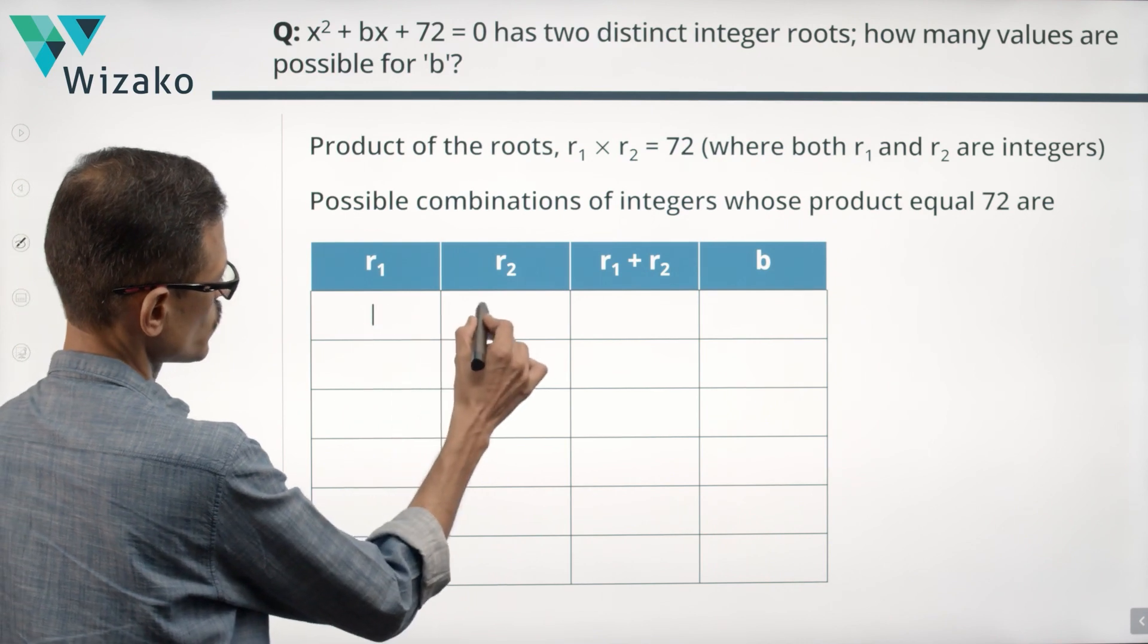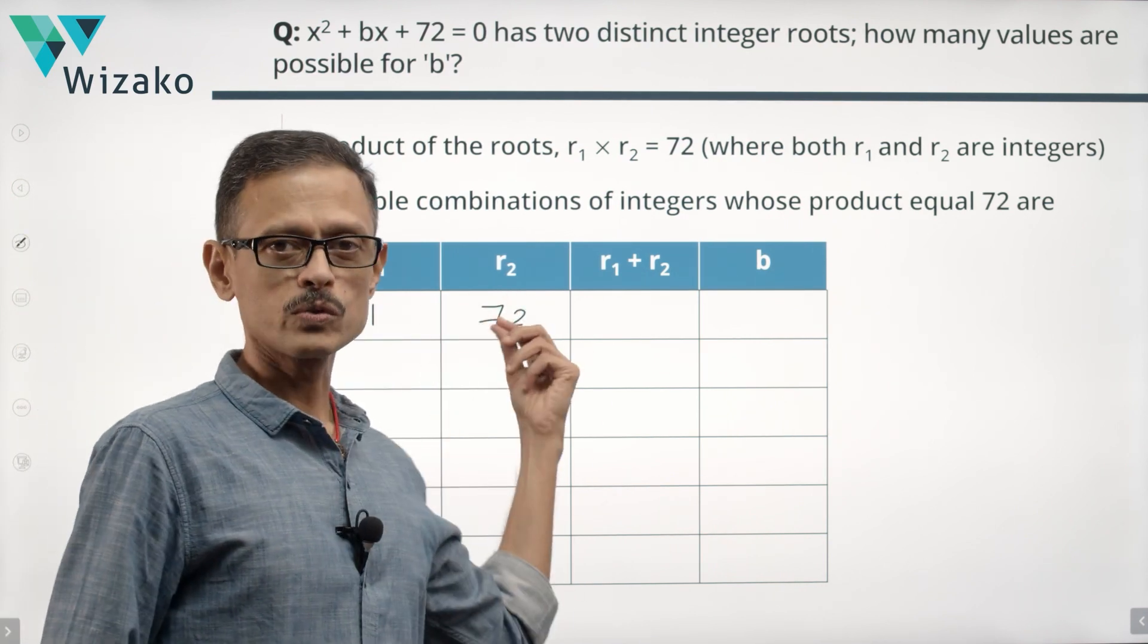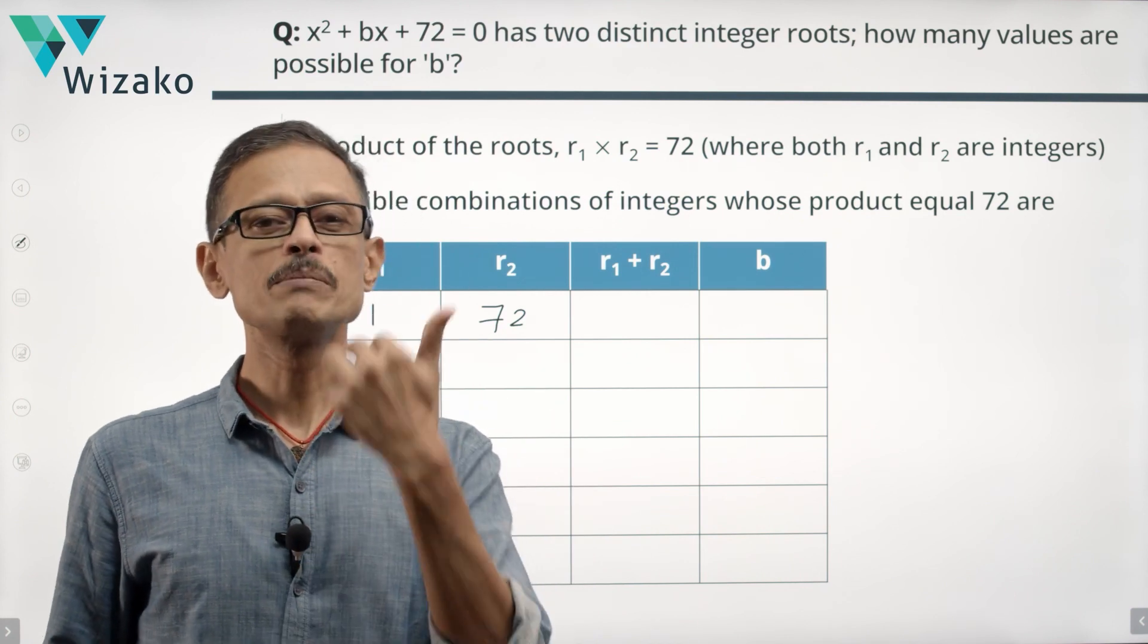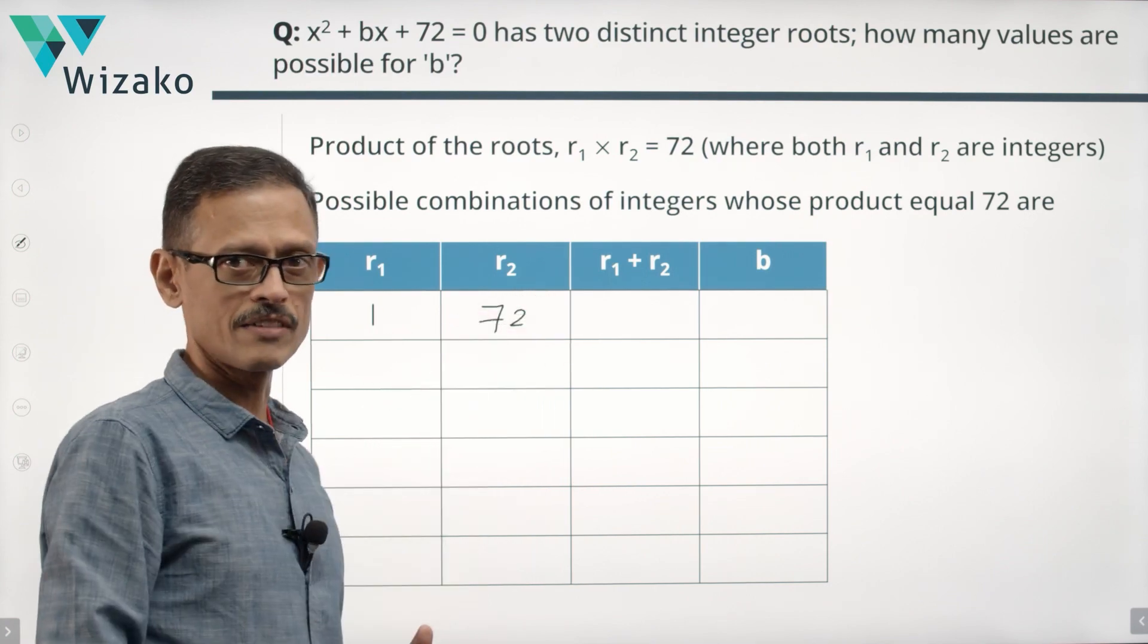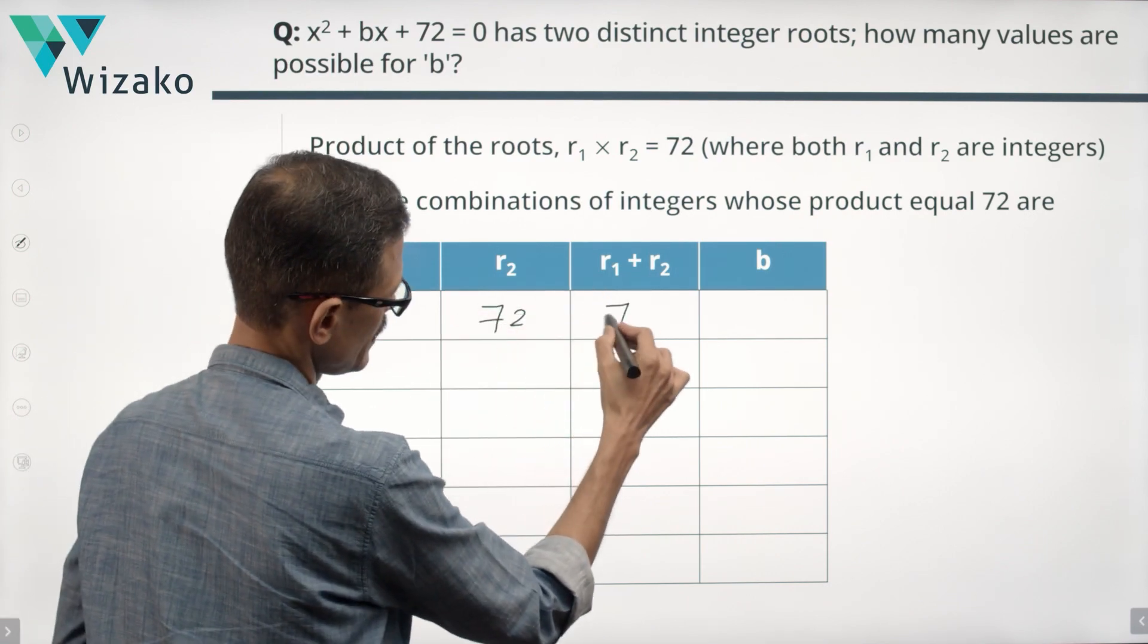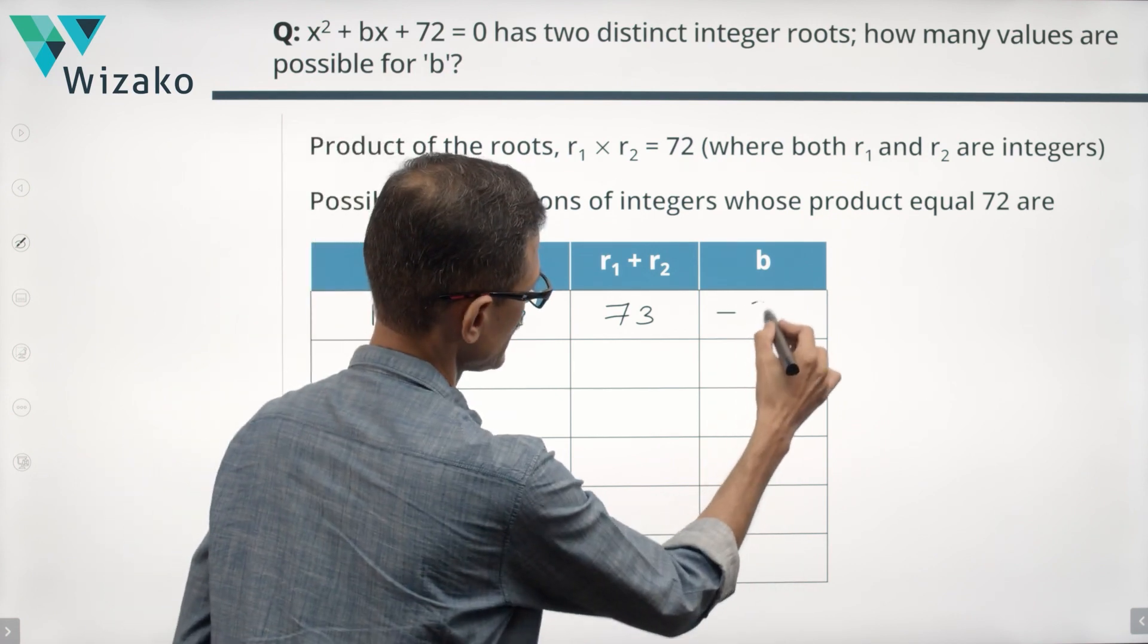The easiest thing that comes to my mind is 1 and 72. Quite evidently both values that R1 and R2 will be taking will be values which are factors of 72. So 1 is a factor of 72, correspondingly the other factor will be 72. So R1 plus R2 is 73. B is equal to minus of R1 plus R2, so that makes it minus 73. This is one value that B can take.